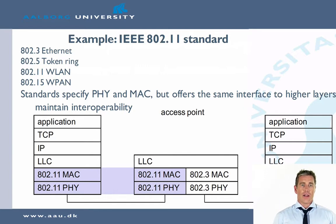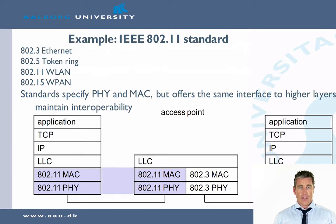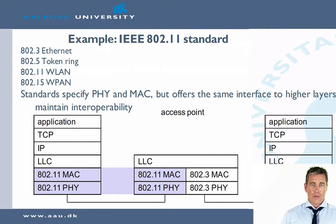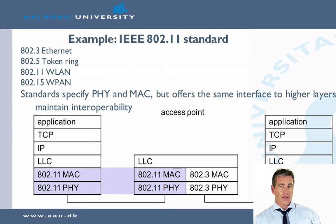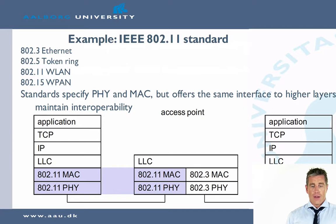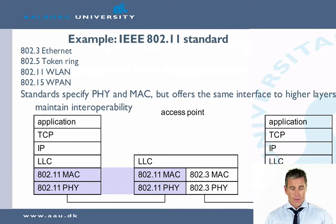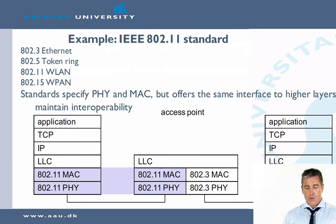If we look at the IEEE 802.11 standard, we can say that it's divided basically into a MAC and into a physical layer, and we'll here be looking at the MAC layer. I put a figure here demonstrating two applications communicating with each other — one is using 802.11 and one is using 802.3, so Ethernet — and they go through a gateway which is communicating between these two kinds of networks.